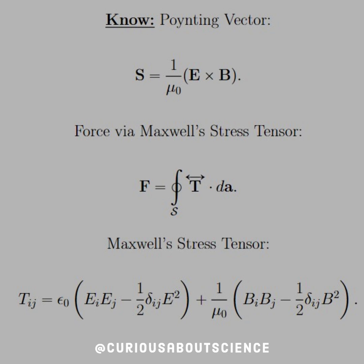What we need to know is the force via Maxwell's stress tensor. F is equal to the closed integral of T dotted with dA on the surface S. If we have several surfaces, the closed integral tells us we need to add all of them together — think of a cube with six surfaces. That double arrow lets you know that T is a tensor, like a matrix, in this case 3x3 with x, y, z in both directions.